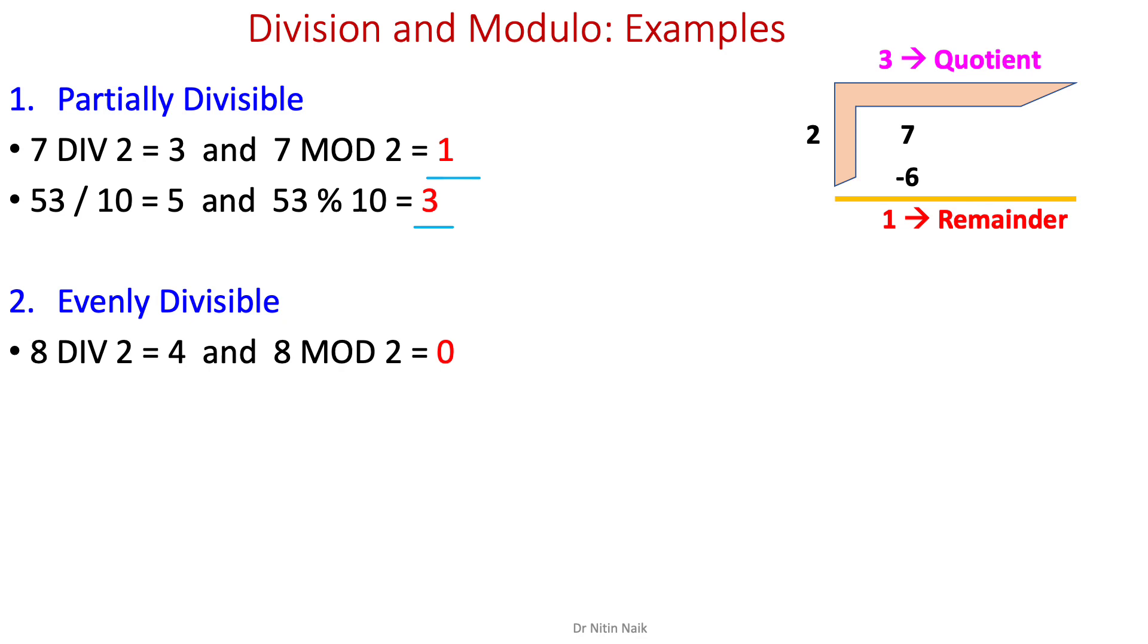The second condition is evenly divisible. When the number is evenly divisible, we always get zero remainder. Let's look at another example. The remainder is zero here.